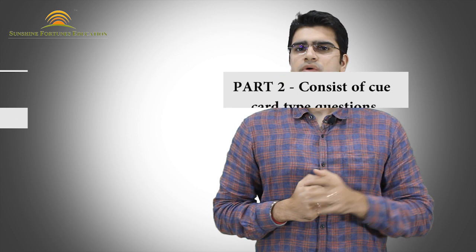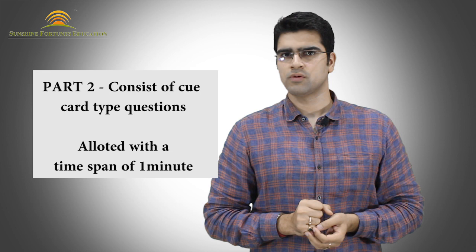Now, I will talk about part 2. Part 2 question is a cue card kind of question. You are given a cue card, in which 3 to 5 questions are mentioned. And you are allotted a time span of around 1 minute. Within this particular 1 minute, you have to think and prepare for your answers. Once 1 minute is complete, the interviewer will ask you to speak. Once you start to speak, you have to cover all the given questions within 1 to 2 minutes of time span.